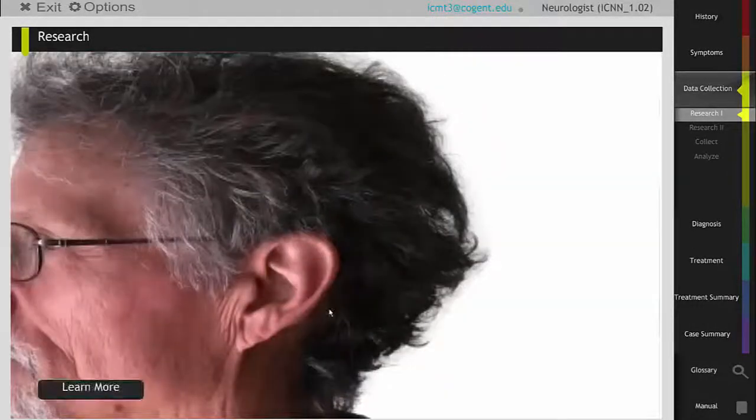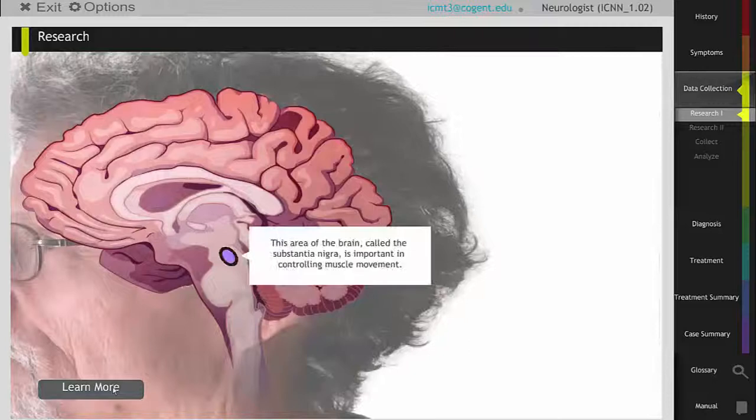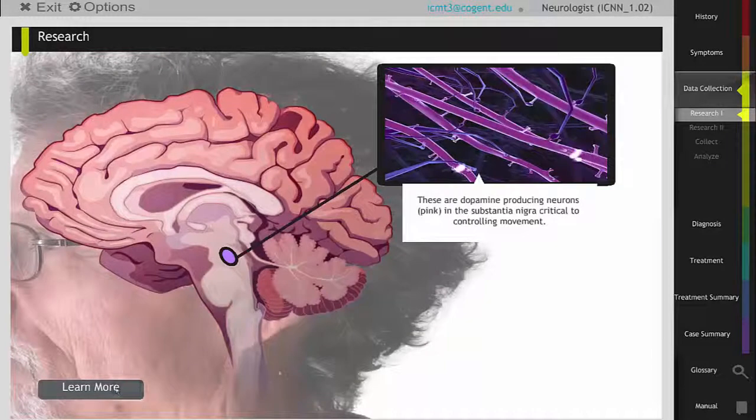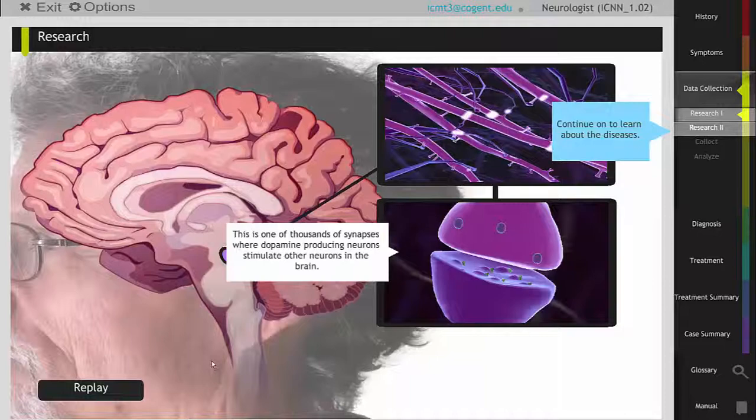They then learn about the production of dopamine, a neurotransmitter that is critical to movement. If dopamine is not produced normally in the brain, a patient will not have normal muscle control.